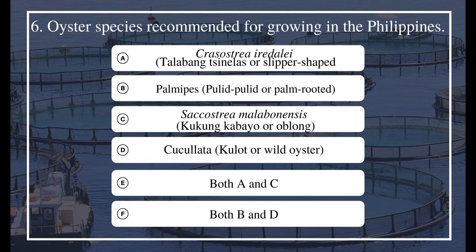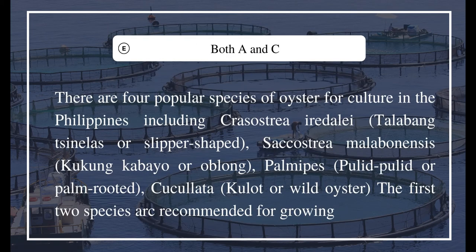Question 6: Oyster species recommended for growing in the Philippines — a) Crassostrea iridalei 'Talibangkad Sinelas' or slipper-shaped, b) Palmites 'Pulid-pulid' or palm-rooted, c) Saccostrea malabanensis 'Cucong-cabeo' or oblong, d) Crassostrea cucullata 'Kulot' or wild oyster, e) Both A and C, f) Both B and D. The answer is E, both A and C. There are four popular species of oyster for culture in the Philippines; the first two species — Crassostrea iridalei and Saccostrea malabanensis — are recommended for growing.